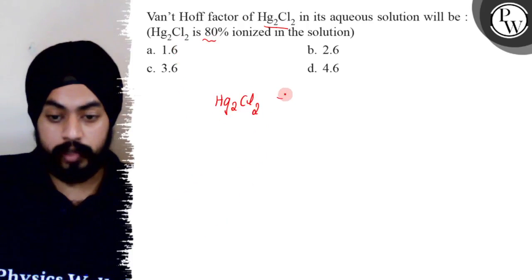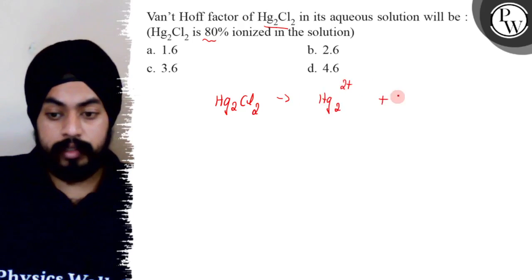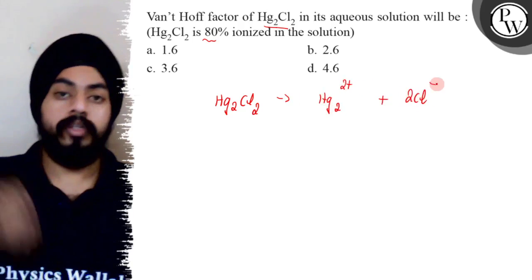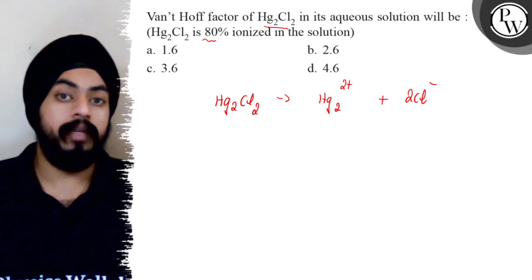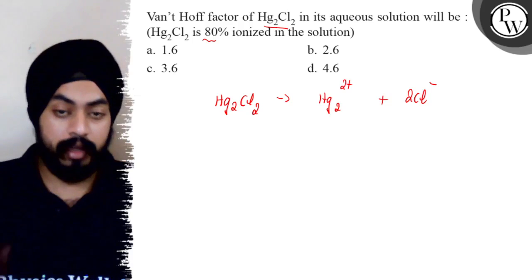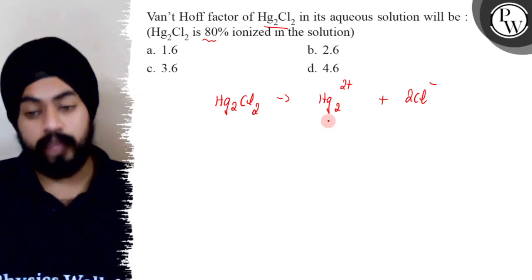Hg₂Cl₂ will be ionized into Hg₂²⁺ and 2Cl⁻. Many students make the mistake of writing this as 2Hg⁺ and 2Cl⁻. Don't do that. The correct form is Hg₂²⁺ and 2Cl⁻. This is mercurous chloride.